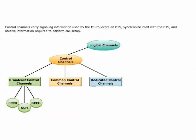All common control channels, CCCH, are transmitted point to point and are further classified into three types. Paging channel, PCH, is used to page the mobile station and its information is transmitted over the downlink. Access grant channel, AGCH, is used to assign a SDCCH and its information is transmitted over the downlink. Random access channel, RACH, is used by a mobile station to request access to the system and its information is transmitted over the uplink.